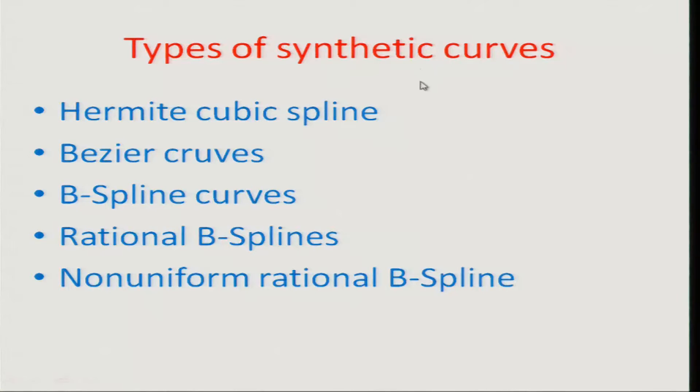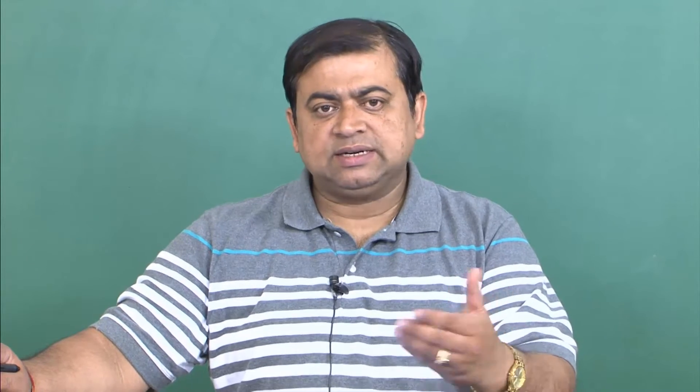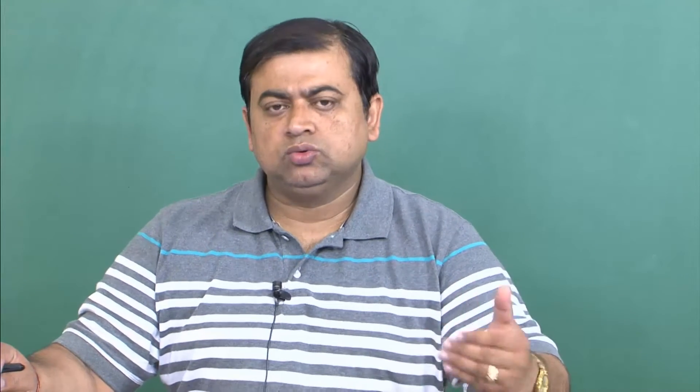In a nutshell the different types of the synthetic curves that we would like to just explore are the Hermit cubic spline, the Bezier curves, the B-spline curves, the rational B-spline and non-uniform rational B-spline. We would give emphasis to the first two kinds with a description of the third kind and in the interest of the time would sort of keep the rational B-spline and non-uniform rational B-spline for just reference. So that if you are interested as a reader to go through you can do that.